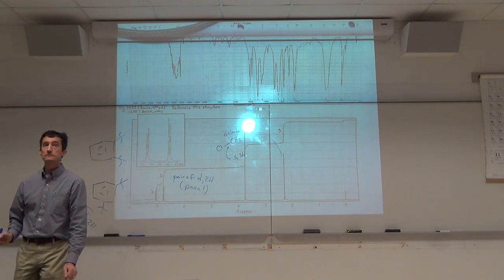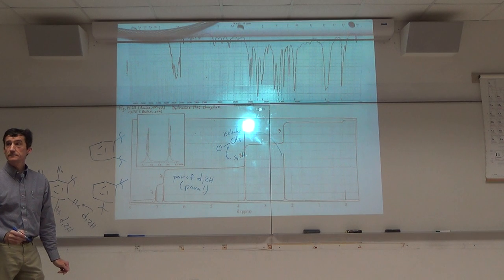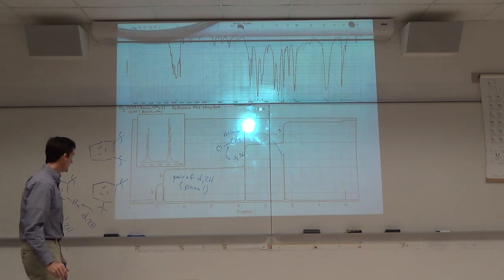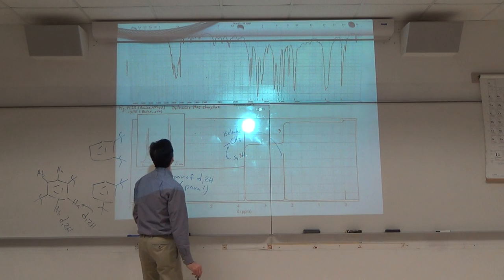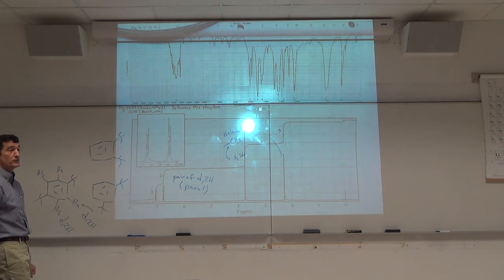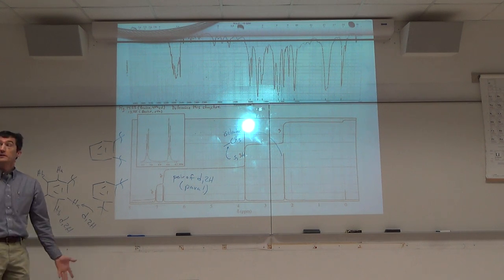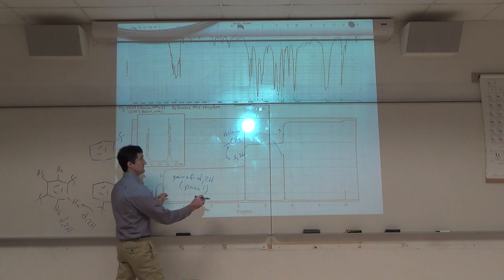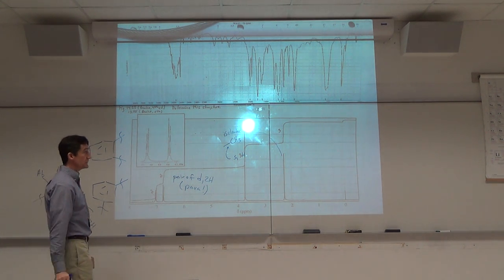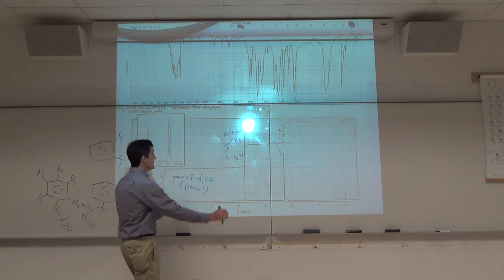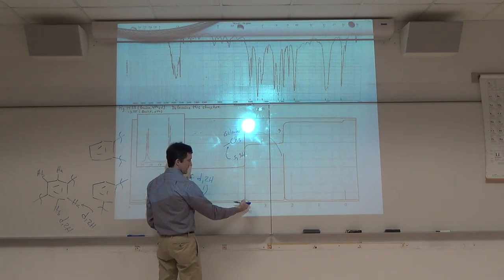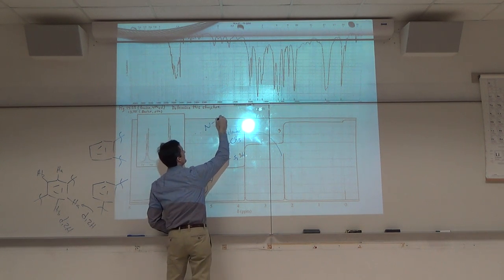What do we know about this signal, this CH3? More downfield. What would make it more downfield? Maybe it's next to chlorine. Could it be next to chlorine? No, because nothing else can bond to the chlorine. If it's next to chlorine, you can't bond anything else there. So it's not next to chlorine. It's got to be something else. So what do you want to say it's next to? Oxygen. We don't have formula. Oxygen or nitrogen. Now those are the most common heteroatoms.